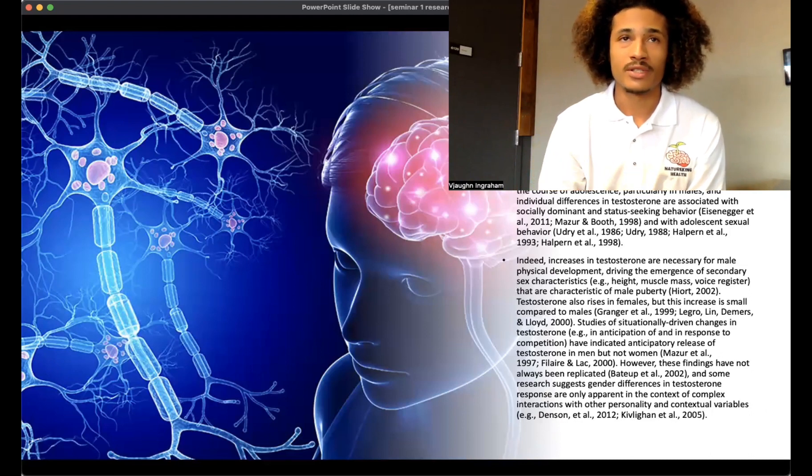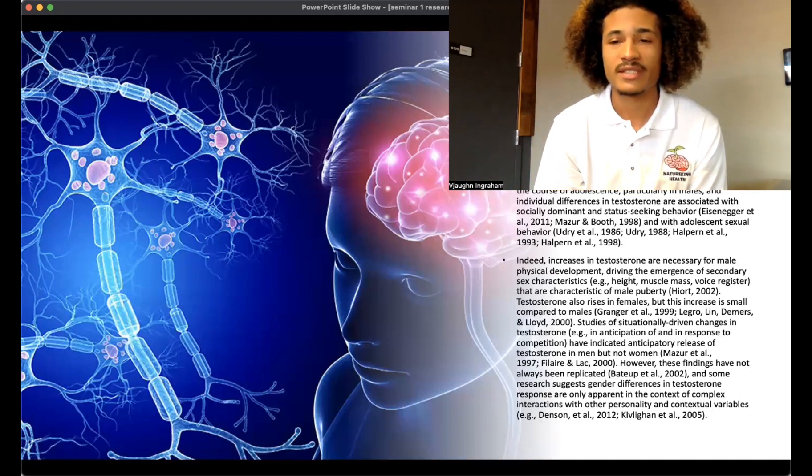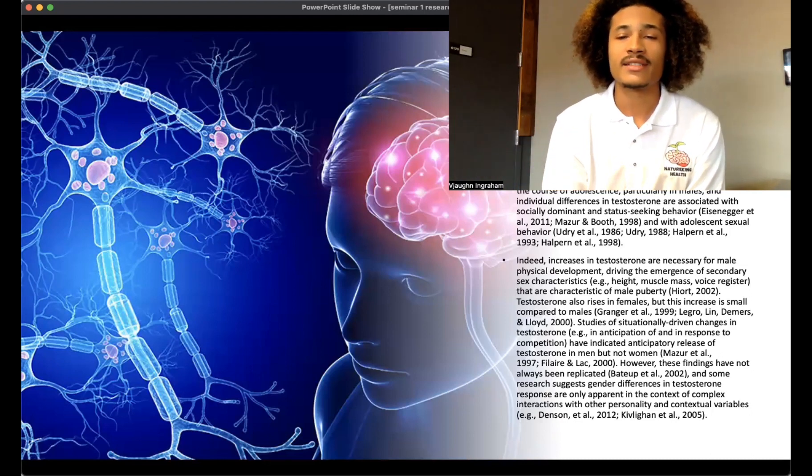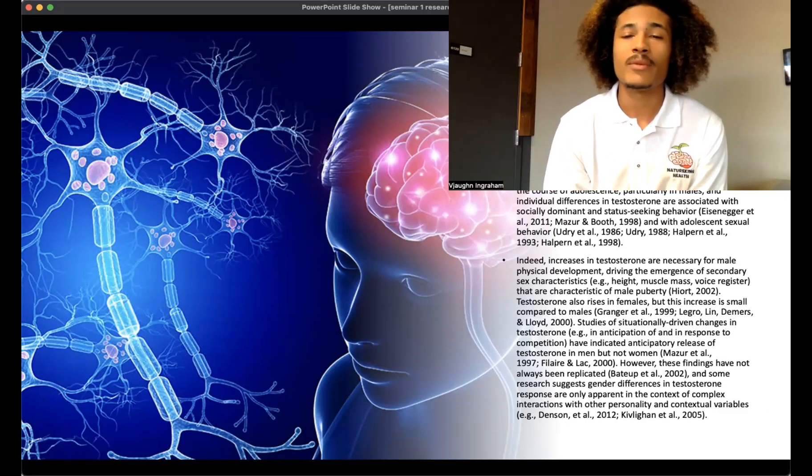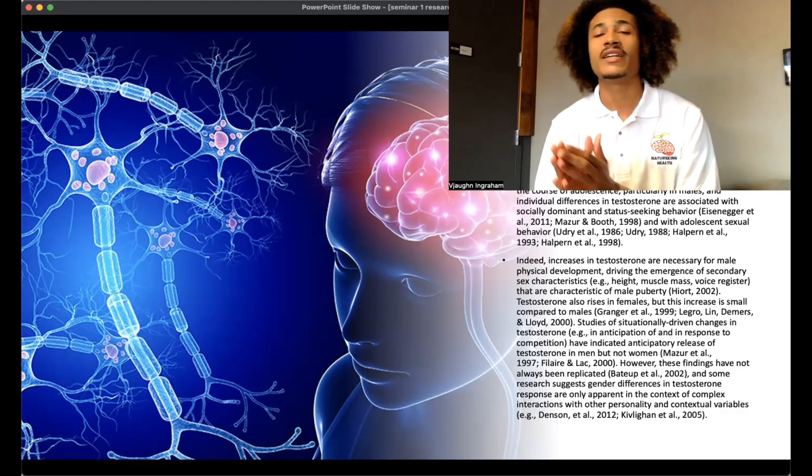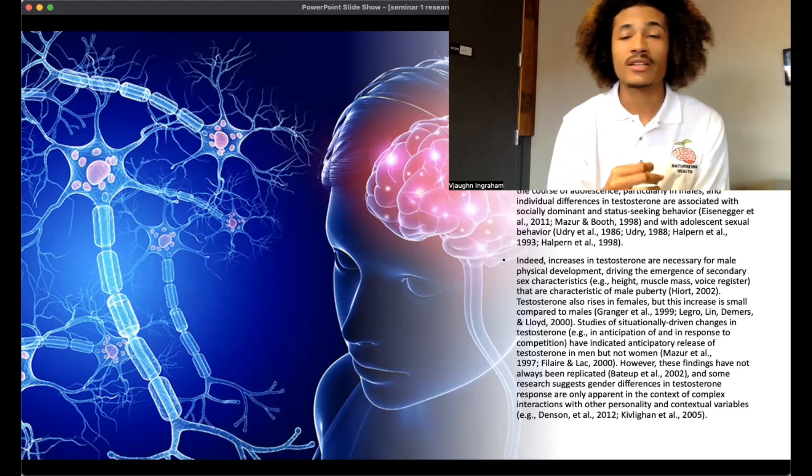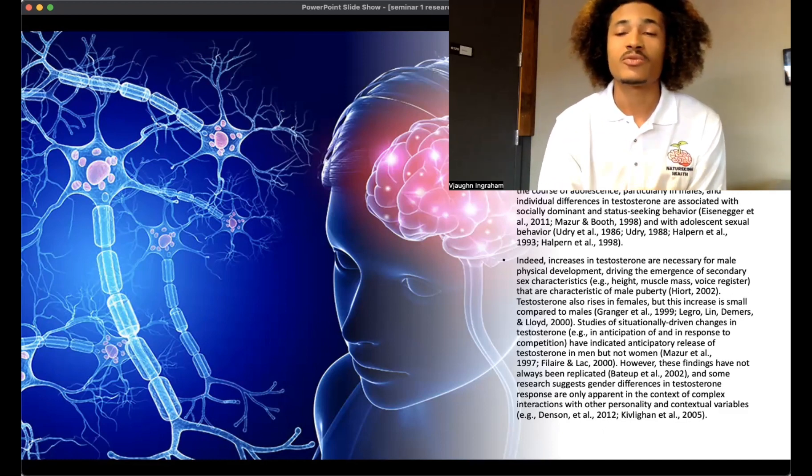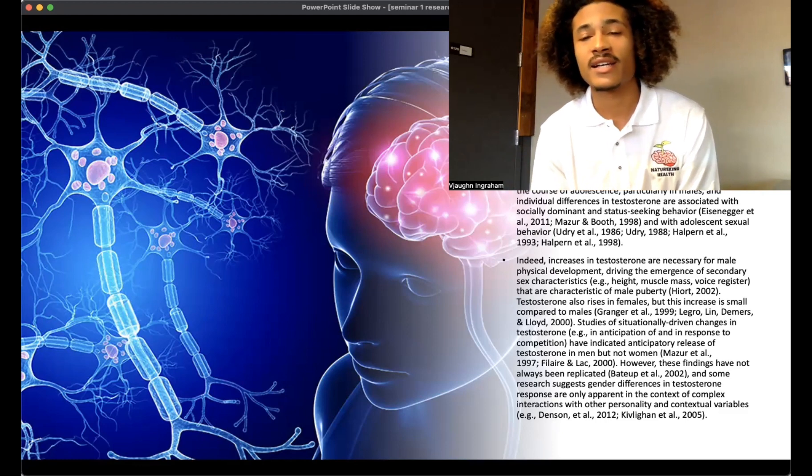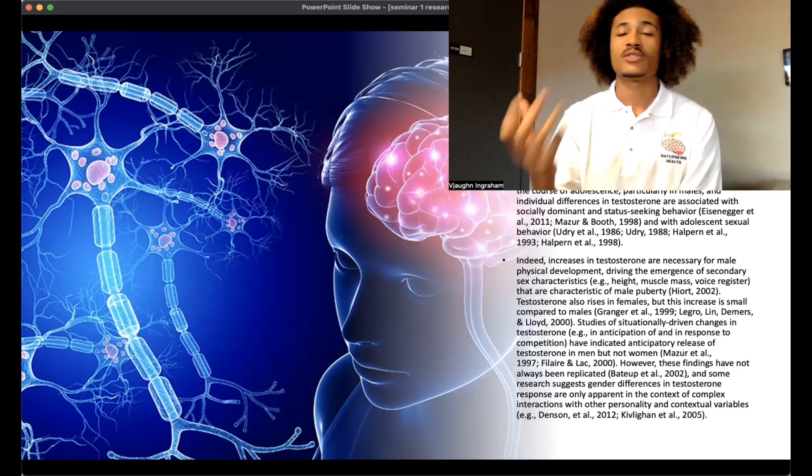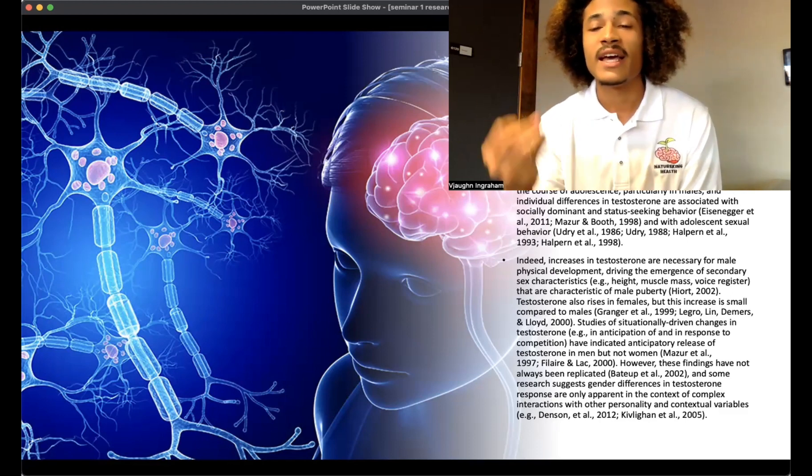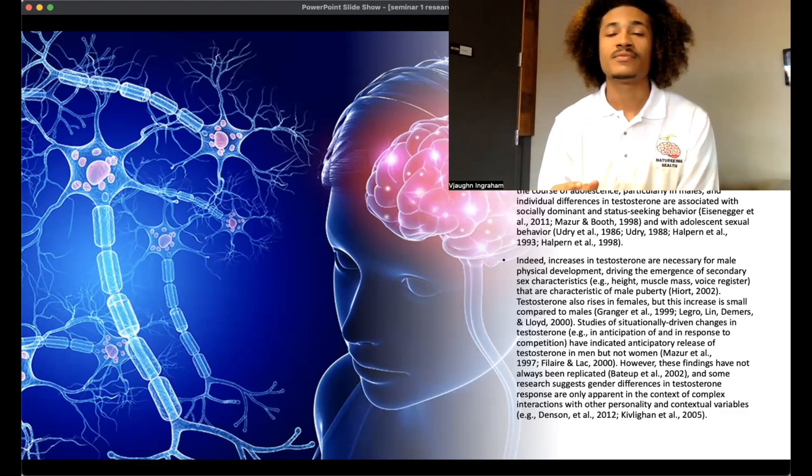Introduction and background. We know that testosterone is a steroid hormone. It is an index of the hypothalamic-pituitary-gonadal axis, a primary neuroendocrine system involving the advancement of puberty and regulating human behavior. Testosterone levels increase over the course of adolescence, particularly in men, and have individual differences in testosterone associated with socially dominant and status-seeking behavior.